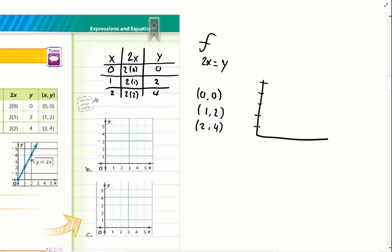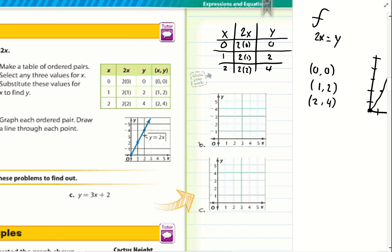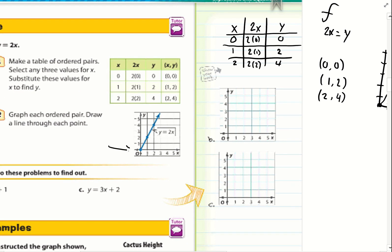Now with this information, I can go ahead and graph this. I can go ahead and graph this. So that's my first point, 0, 0. My next point is 1, 2. And my last point is 2, 4. If you notice, this is a straight line. So this would be a linear function, just like shown in the example here.